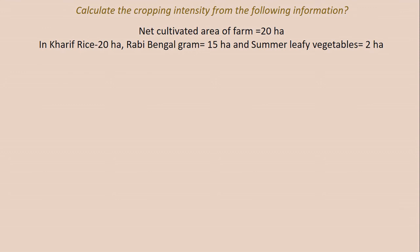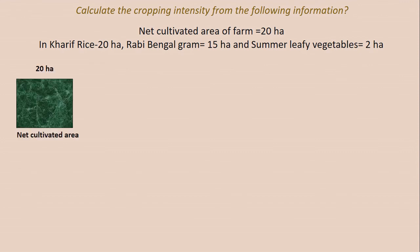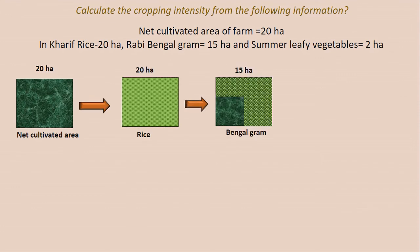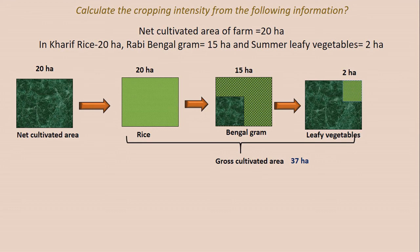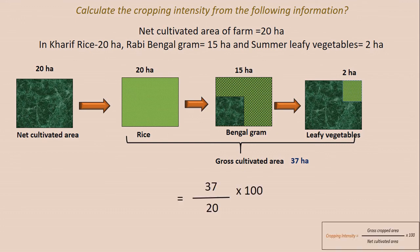Problem 6: Calculate the cropping intensity where the net cultivated area is 20 hectares. In kharif, rice was cultivated in 20 hectares; in rabi, Bengal gram in 15 hectares; and in summer, leafy vegetables in 2 hectares. The gross cultivated area is 20 + 15 + 2 = 37 hectares. Using the formula: 37 ÷ 20 × 100 = 185% is the cropping intensity.